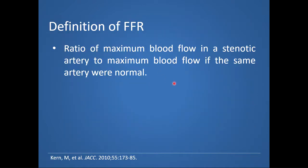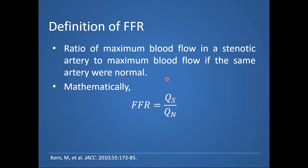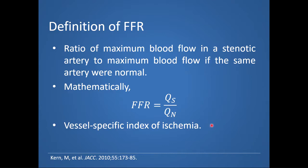Let's now define what FFR represents. FFR is a ratio of maximum blood flow in a stenotic artery to maximum blood flow of the same artery if normal. It can also be thought of as the index of the resistance of flow along the epicardial vessel. Mathematically, it can be expressed as a ratio of coronary flow across a stenotic lesion divided by coronary flow if that stenotic lesion was not present. FFR accounts for collateral flow and is generally not influenced by systemic hemodynamics, and it becomes a lesion-specific index of myocardial ischemia.